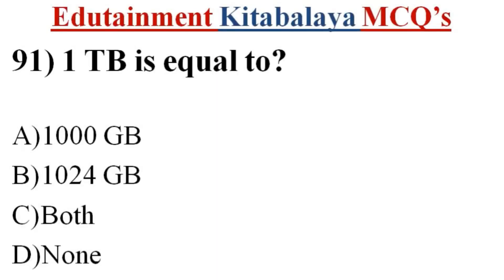Question number 91. One terabyte is equal to? A. 1000 gigabytes. B. 1024 gigabytes. C. Both. D. None. Correct answer is B. 1024 gigabytes.